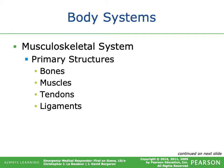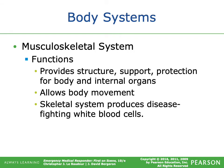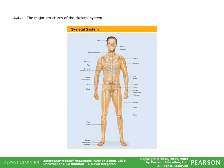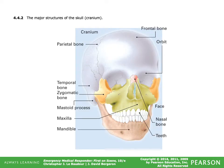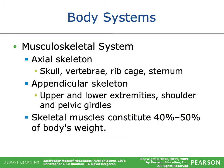The musculoskeletal system's primary structures are the bones, muscles, tendons, and ligaments. Its functions are to provide structure, support, and protection for the body and its internal organs, allow for body movements, and produce disease-fighting white blood cells. The axial skeleton includes the skull, vertebrae, ribcage, and sternum. The appendicular skeleton includes your upper and lower extremities, shoulder, and pelvic girdles. Skeletal muscle represents about 40-50% of your body weight depending on body composition.